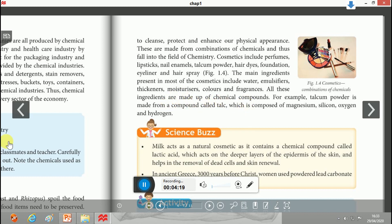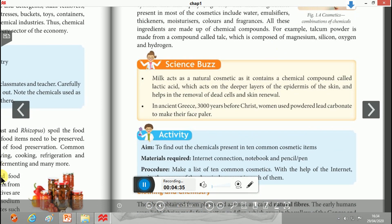These fragrances are esters, the derivative of organic fatty acids. All these ingredients are made up of chemical compounds. For example, talcum powder is made of talc, which is composed of magnesium, silicon, oxygen, and hydrogen. In ancient Greece, women used powdered lead carbonate to make their face pale.